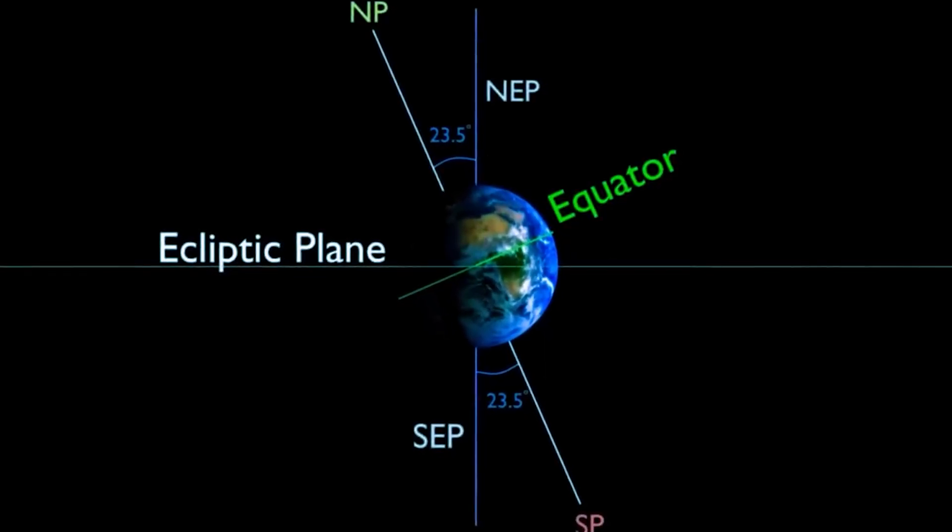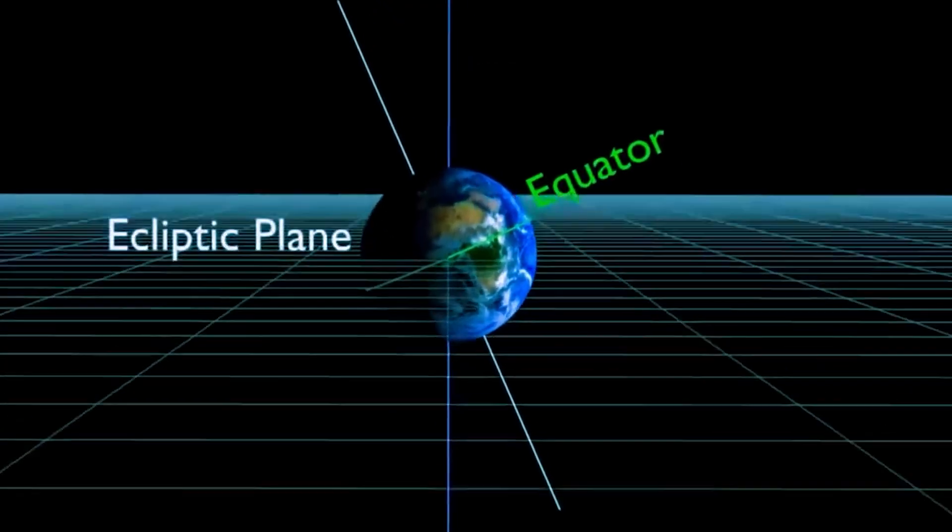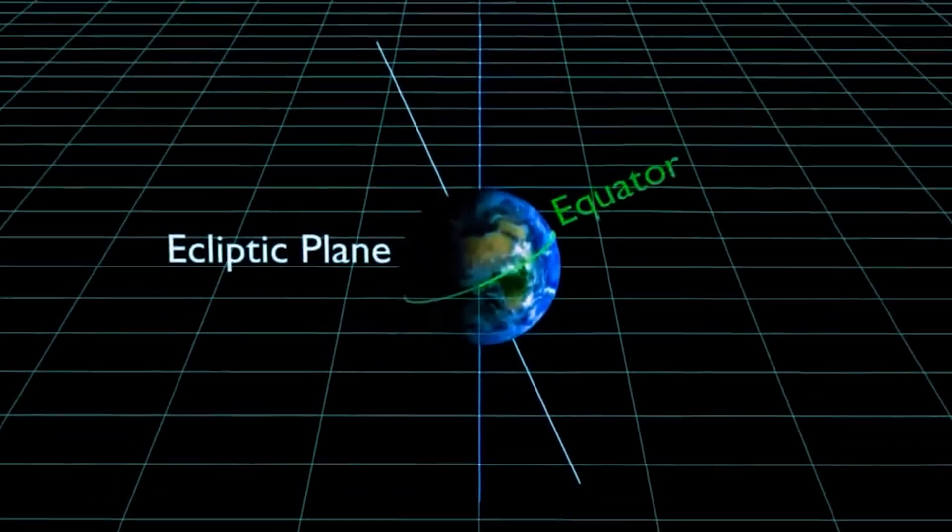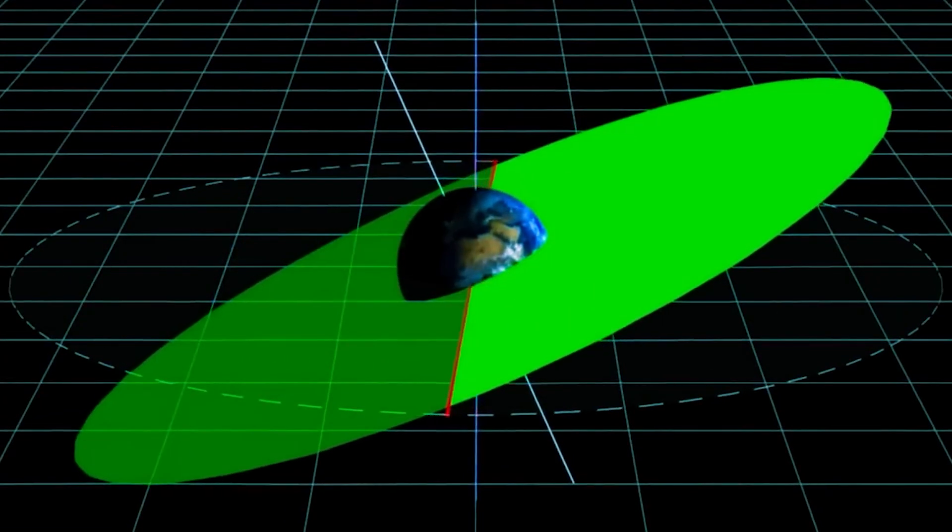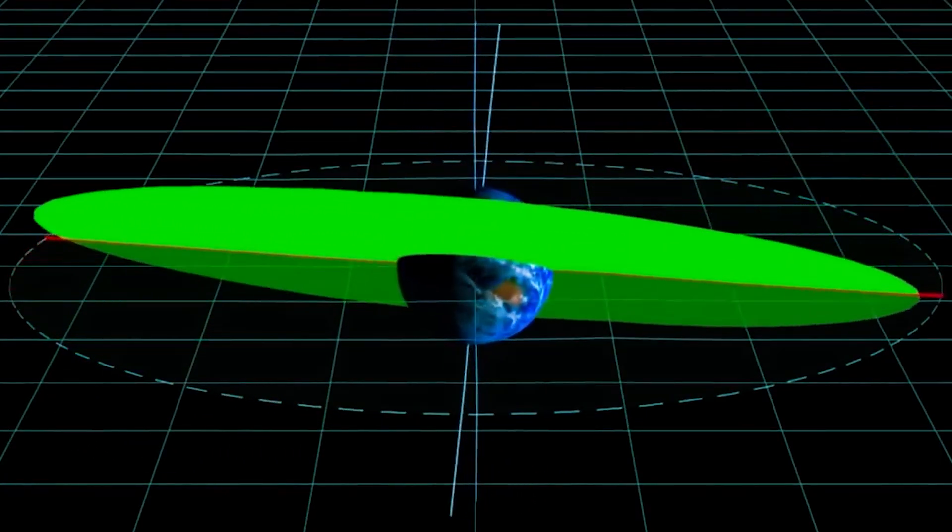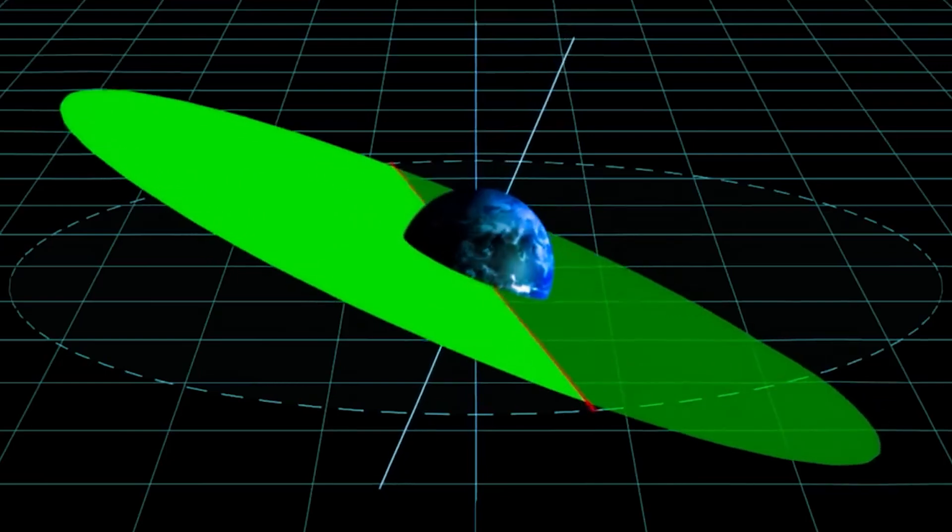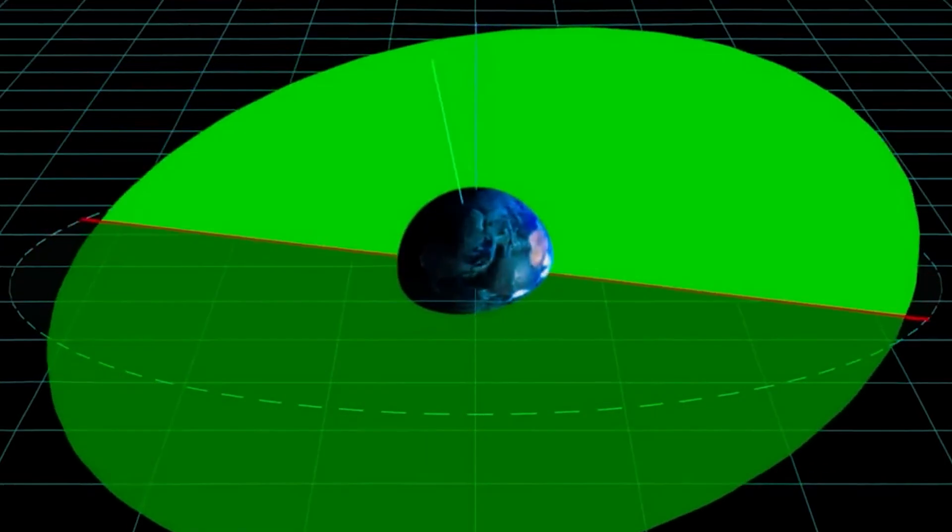This variation, known as the obliquity of the ecliptic, changes the way the Sun illuminates the Earth's surface, influencing the duration of days and nights in different regions and times. These complex cycles, combined with other astronomical changes, such as the precession of the equinoxes and variations in the Earth's orbital eccentricity, form what we call Milanković cycles.